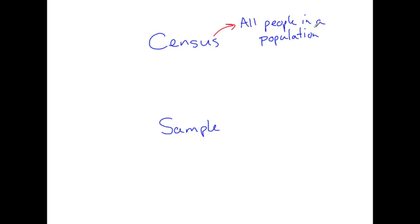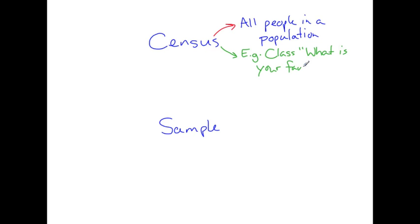The population might be every person in our class, every person in the school, every person in Ontario, or every person in Canada. For example, let's pretend that we are doing a survey of every person in our class, and our survey question is going to be: what is your favorite movie? Since we are surveying every person in our class, this is a census survey.